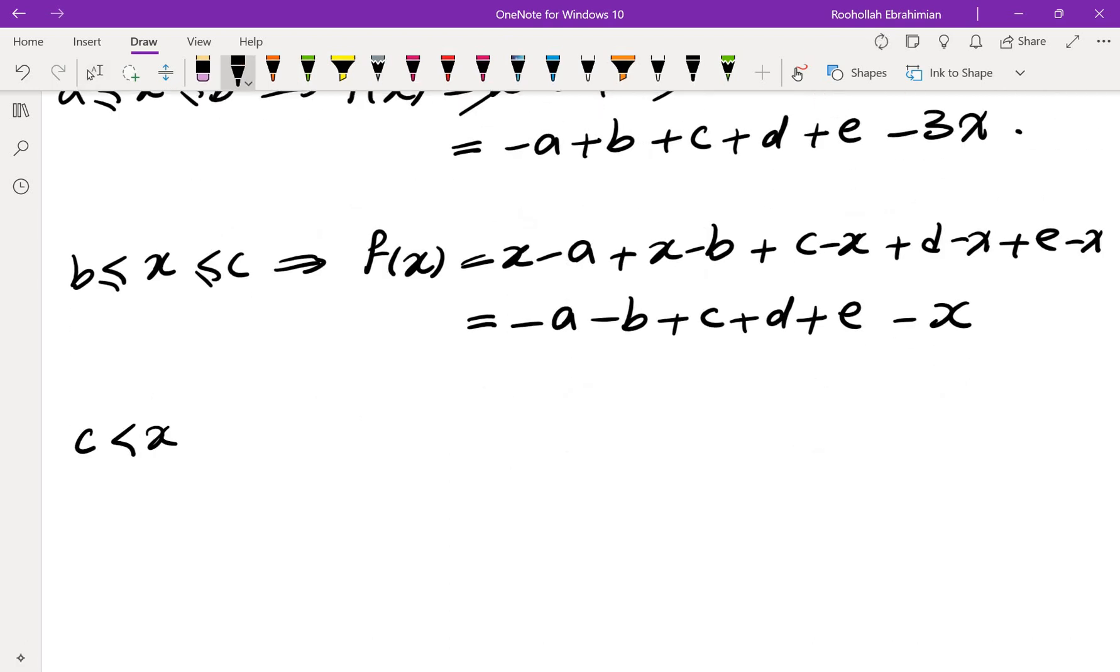If we look at after C, what happens between C and D, we are going to get x minus A, x minus B, x minus C. After that, it becomes negative, D minus x and E minus x. At this point,